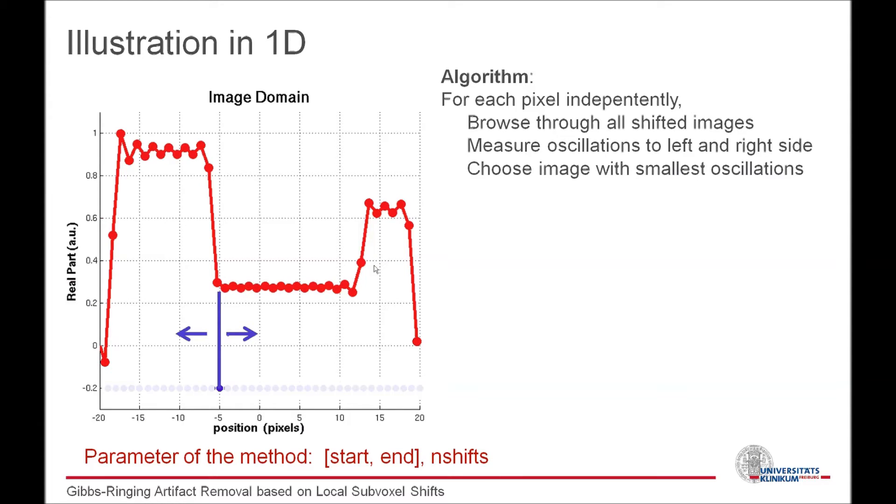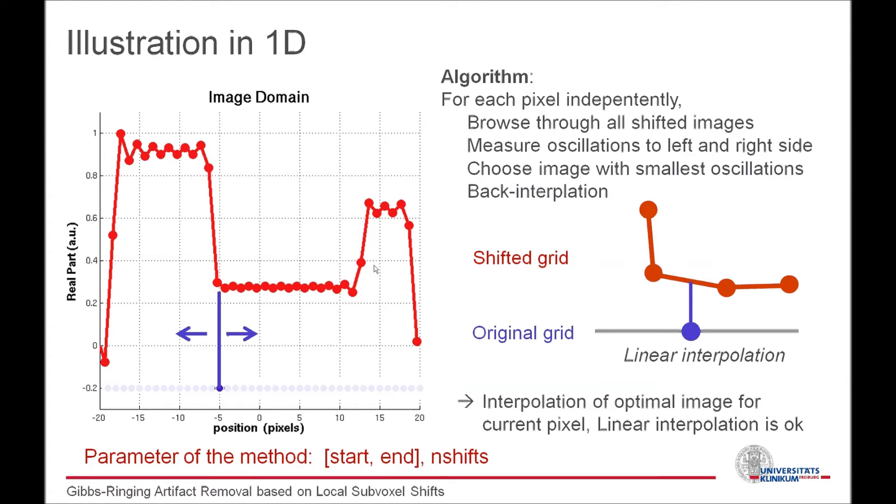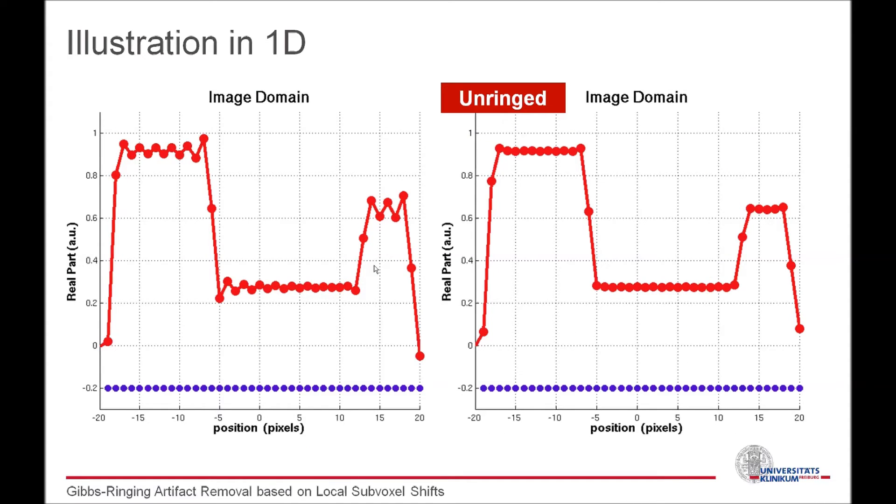Now, because the image, or the grid, depending on how you look at it, was shifted, we have to compensate for that. Therefore, we take the optimal image at the shifted grid, and we calculate the value of our current pixel by interpolating the optimal image, which lives on the shifted grid. One can use any order of interpolation. In our experience, we saw that linear interpolation does a sufficiently good job here. So if you do this process for each pixel individually, the artifact can nicely be removed, with almost no smoothing of the edges, as you can see here.